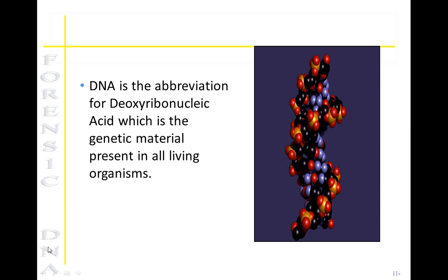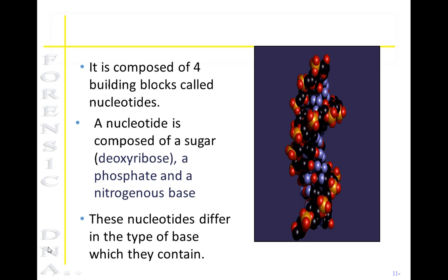DNA is the abbreviation for deoxyribonucleic acid. This is the building block for an individual's genetic makeup. A person's DNA is the same in every living cell, so DNA extracted from blood, saliva, skin, or semen will all test the same for an individual. It is composed of four building blocks called nucleotides. A nucleotide is composed of a sugar, a phosphate, and a nitrogen base.